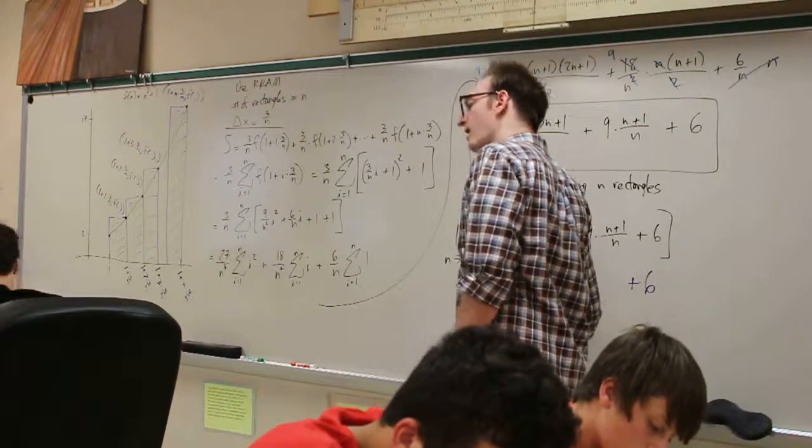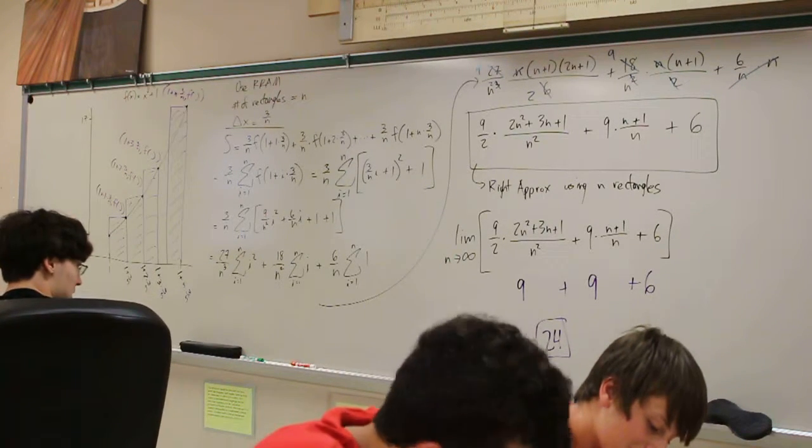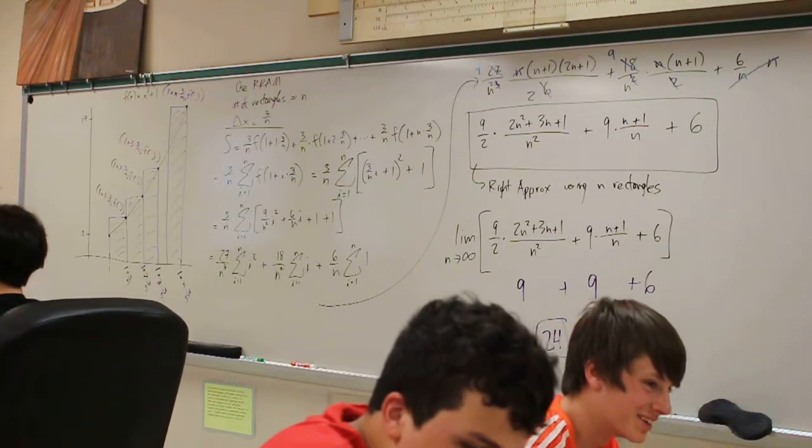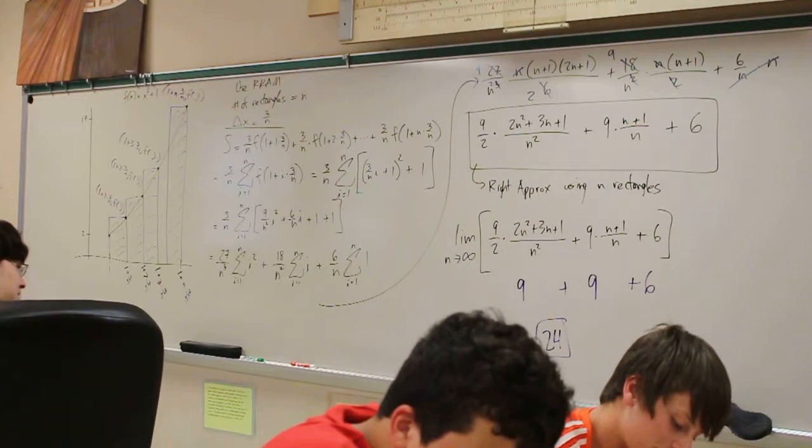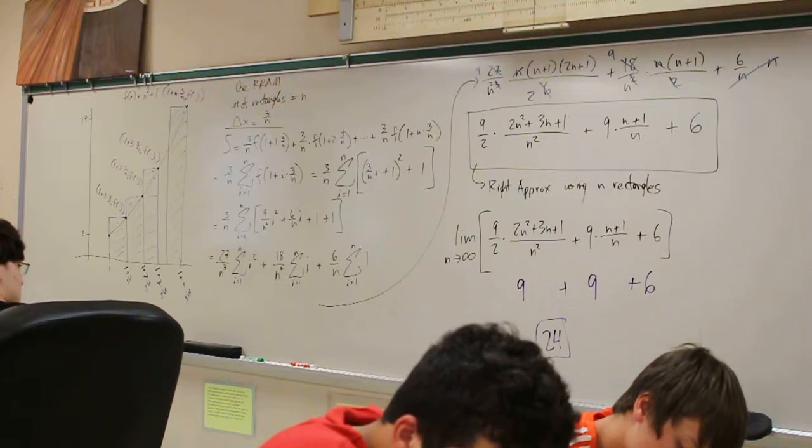Oh, okay. Whoa! The exact area underneath this parabola between x equals 1 and x equals 4 is 24.